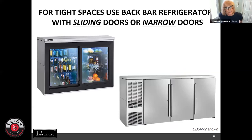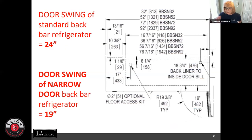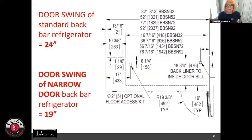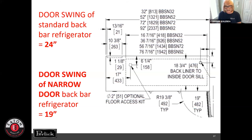For tight spaces with less than 36 inches to work with, look at back bar units with either sliding doors or narrow doors. The BBR 48 has a sliding door option, and there's a narrow-door option with only a 19-inch door swing compared to a standard 24-inch swing. The only issue with narrow-door units is that larger European kegs — sometimes called bubble kegs because they have a wider middle — can be a little tight to put in, but otherwise a narrow-swing back bar door works perfectly well.